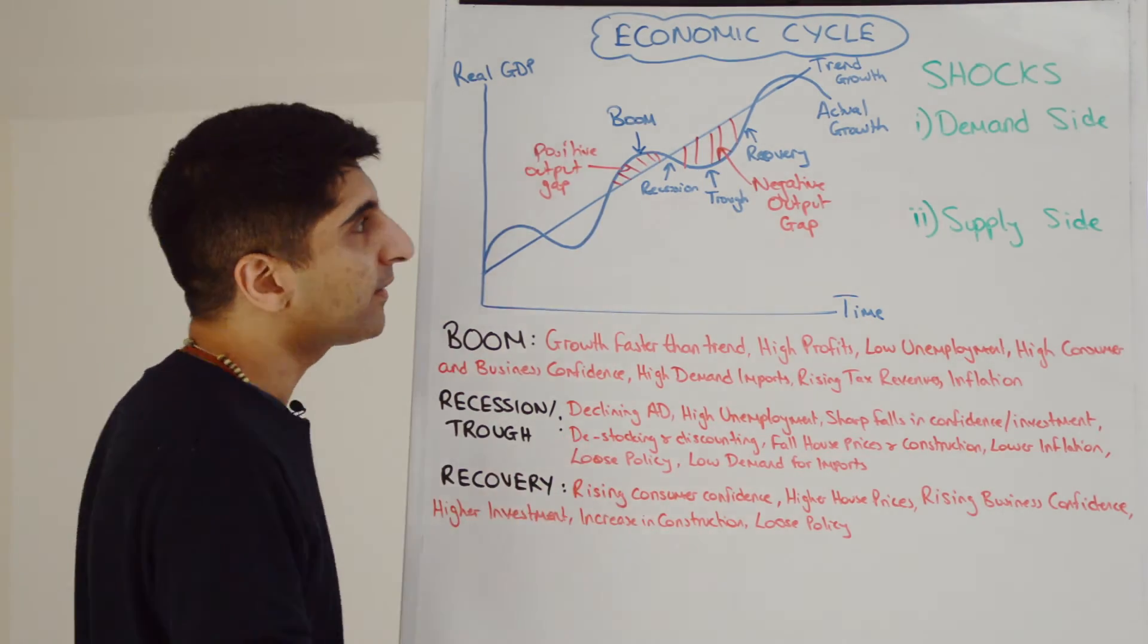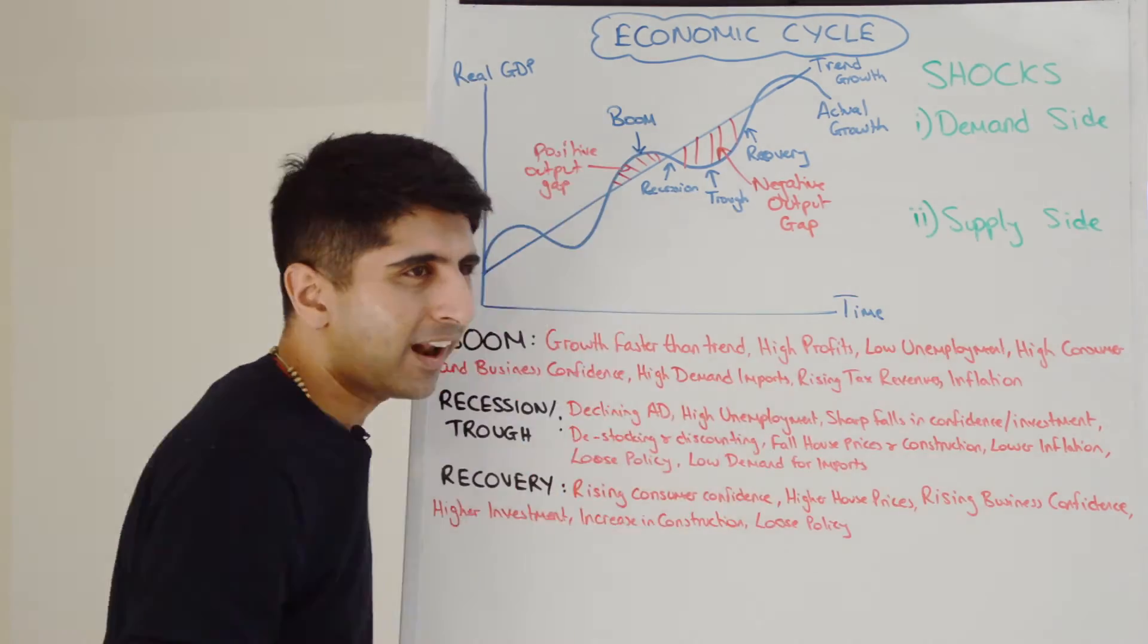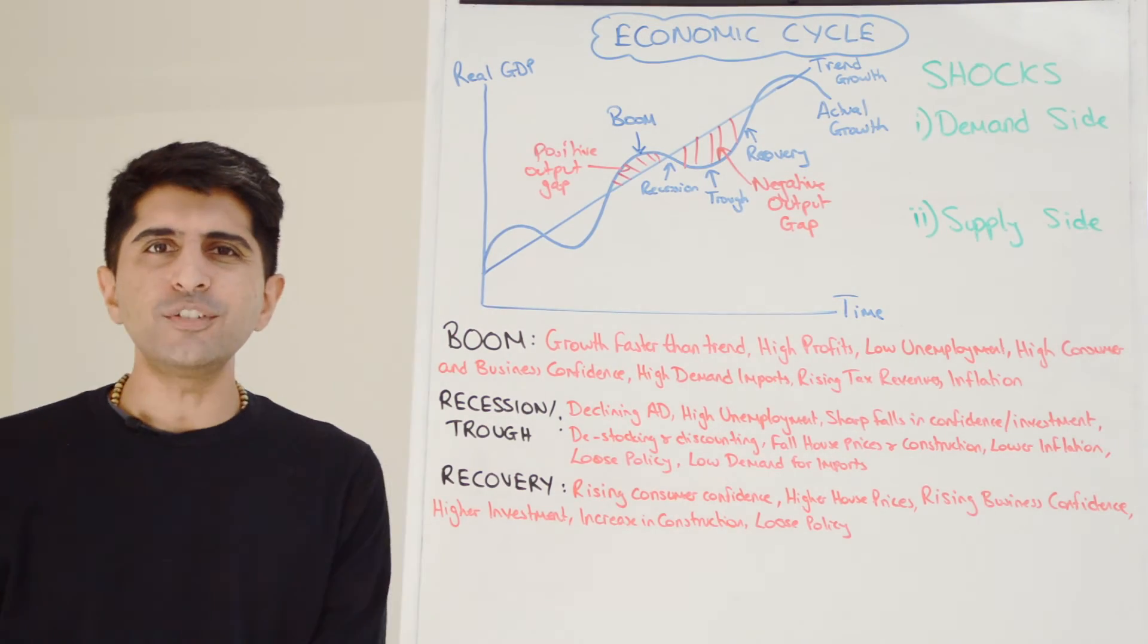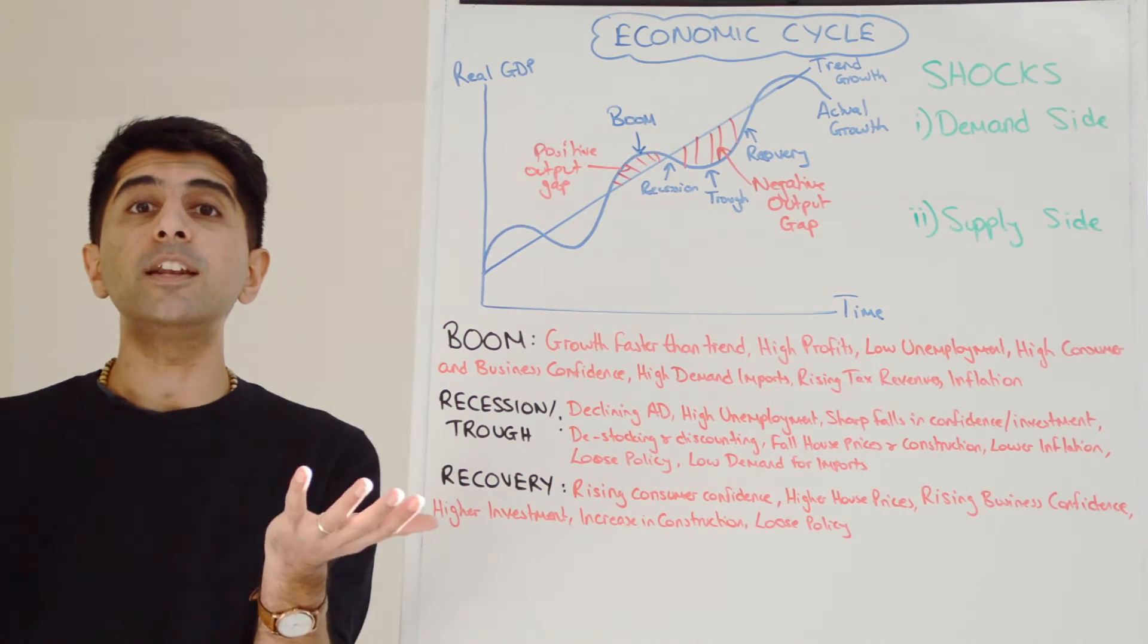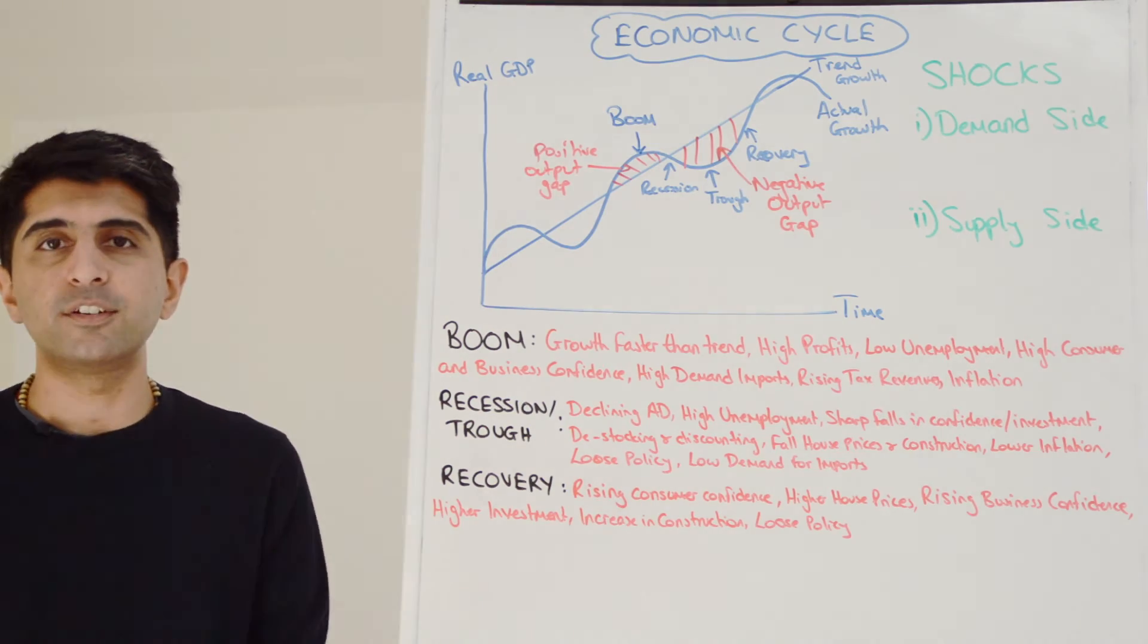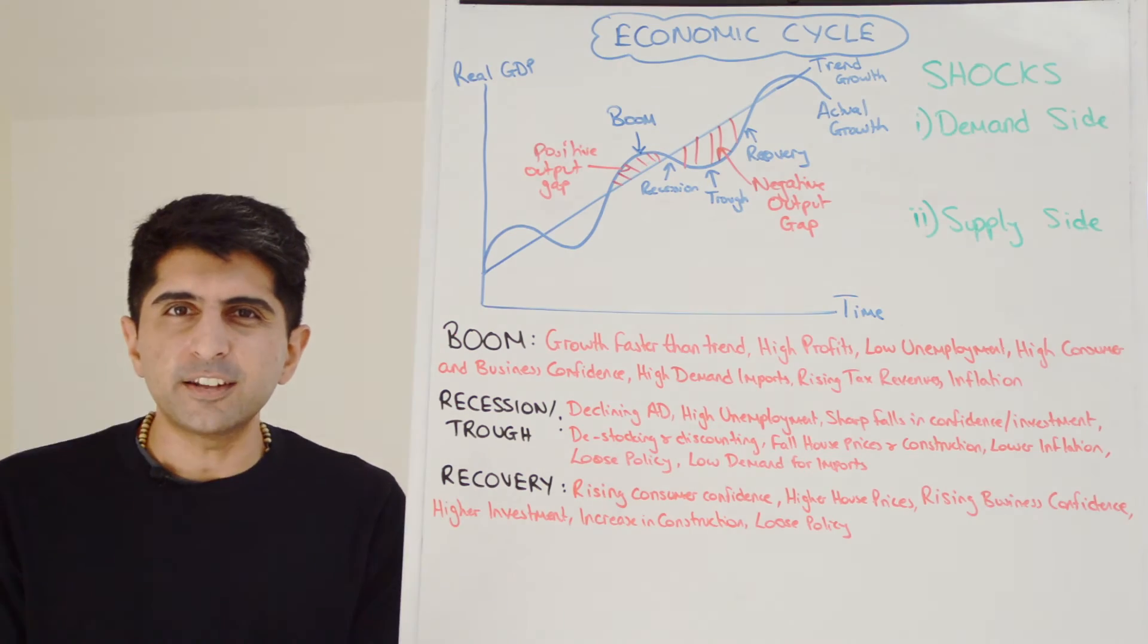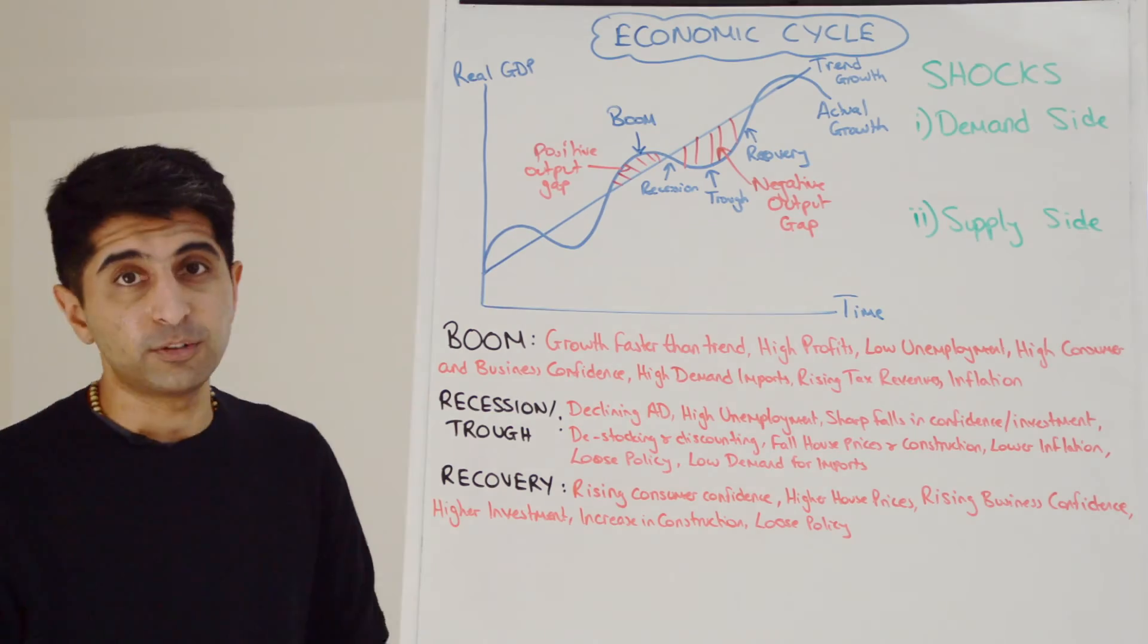And those bad things can happen on the demand side or they can happen on the supply side. When I say demand side, I mean shocks to aggregate demand. Factors that end up reducing AD that nobody can predict. Let's look at a few. Maybe a sudden increase in interest rates. That suddenly happens. No one expected that to happen. And bam, recession is the end result. We see growth falling. Maybe we see a sudden cut in government spending. If that happened, then bam, that can take an economy into recession.